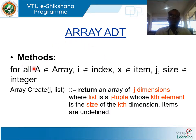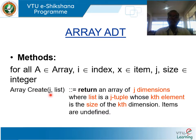The methods for arrays are defined as follows. For all: a is an array, i is an index, x is an item, and j and size are integers. The Create operation — Create(j, list) — returns an array of j dimensions where list is a j-tuple whose kth element is the size of the kth dimension. Items are undefined initially.